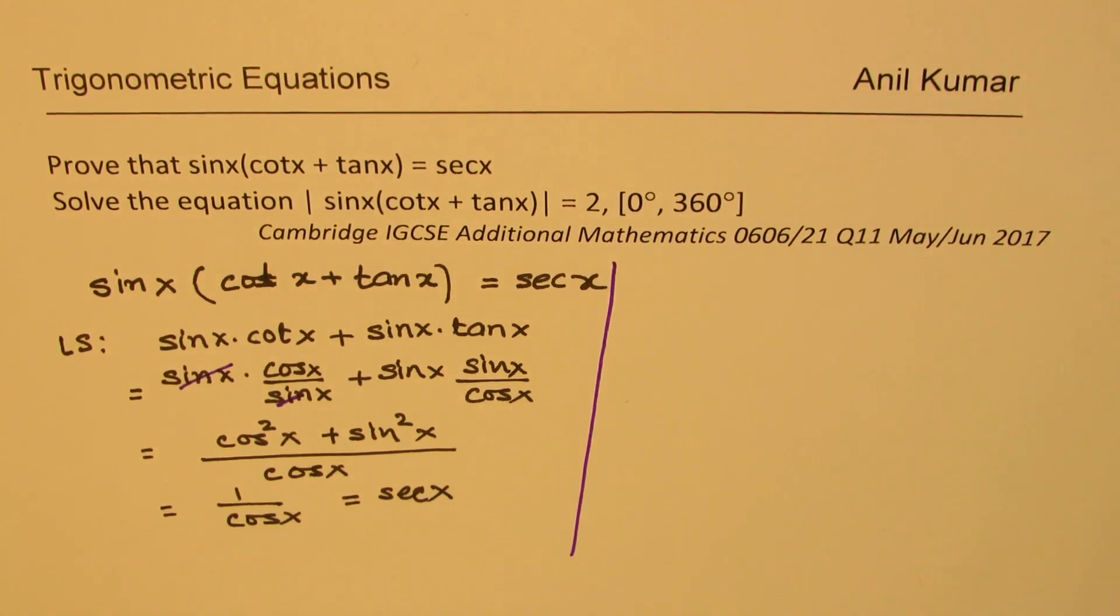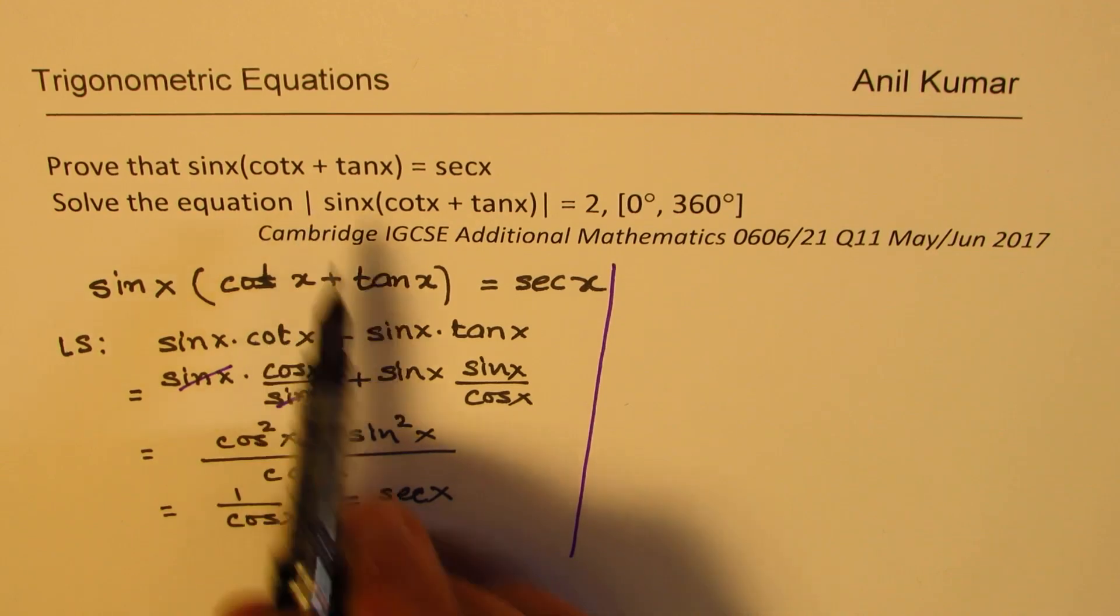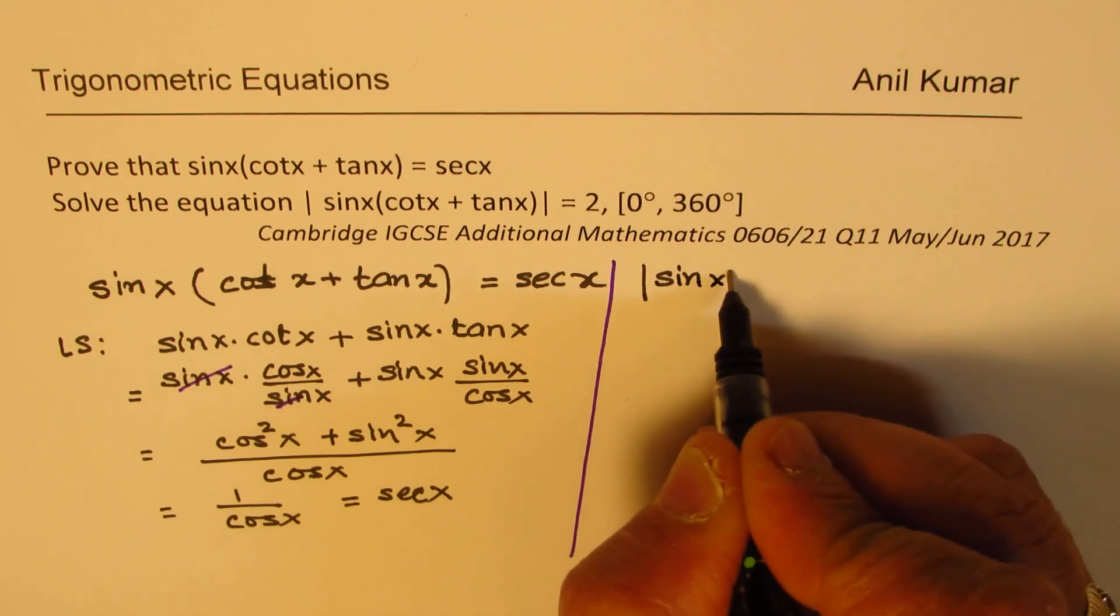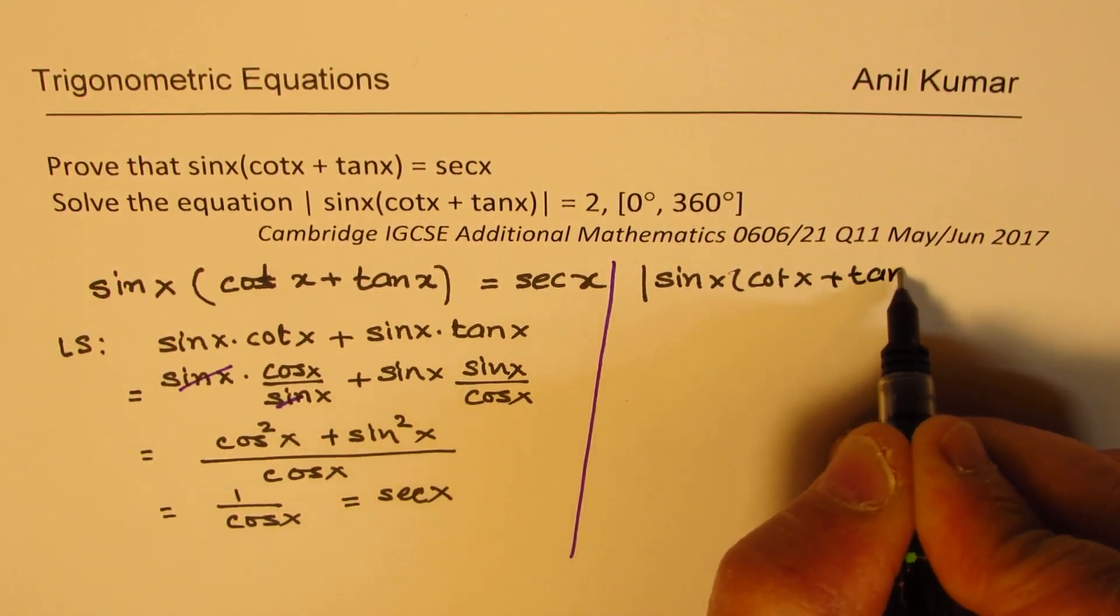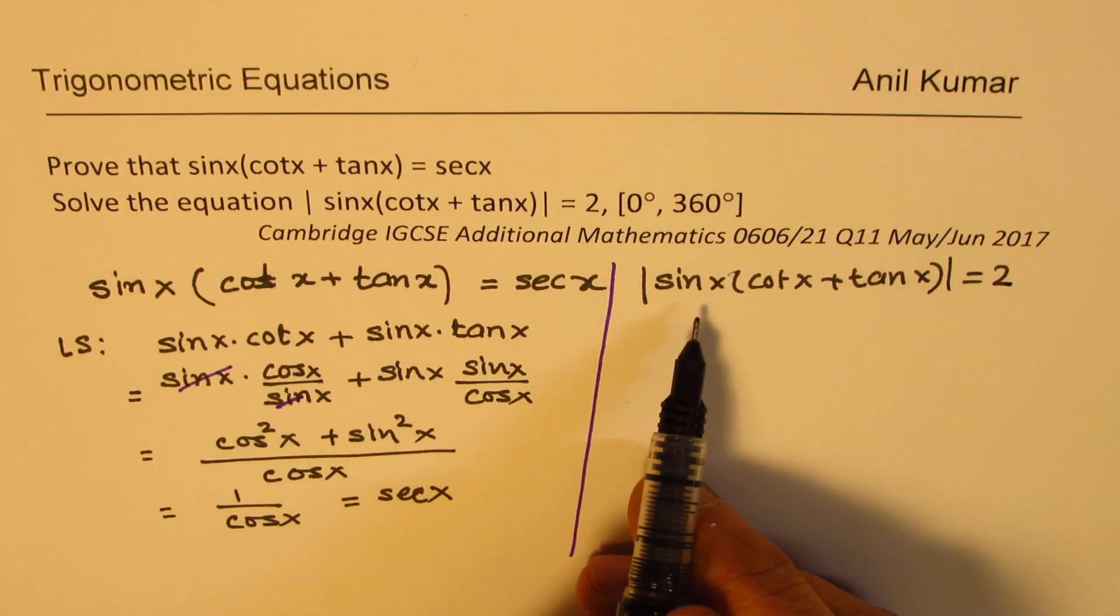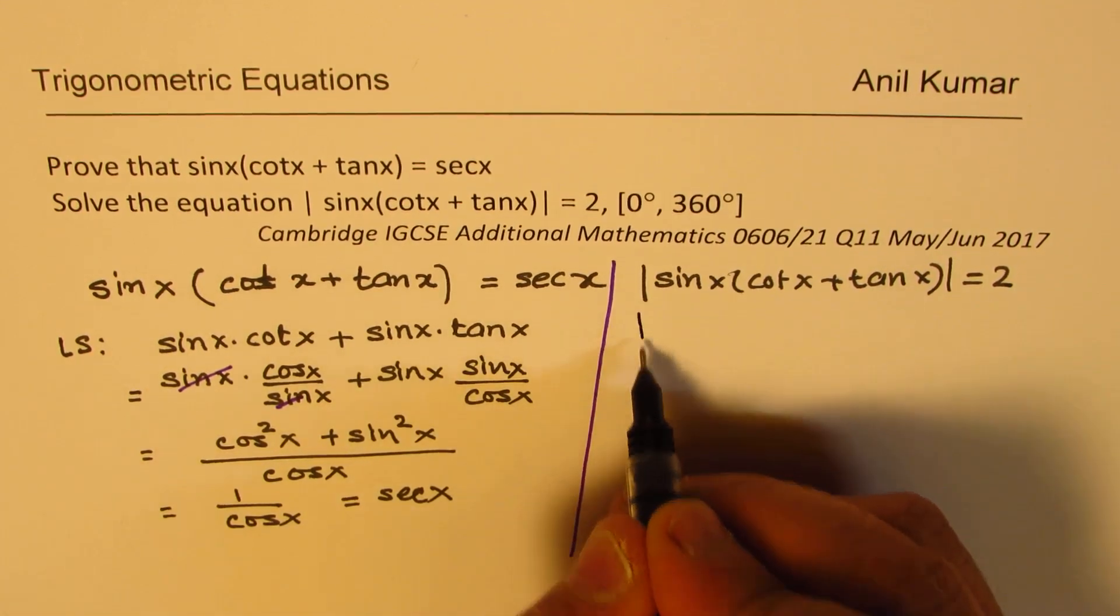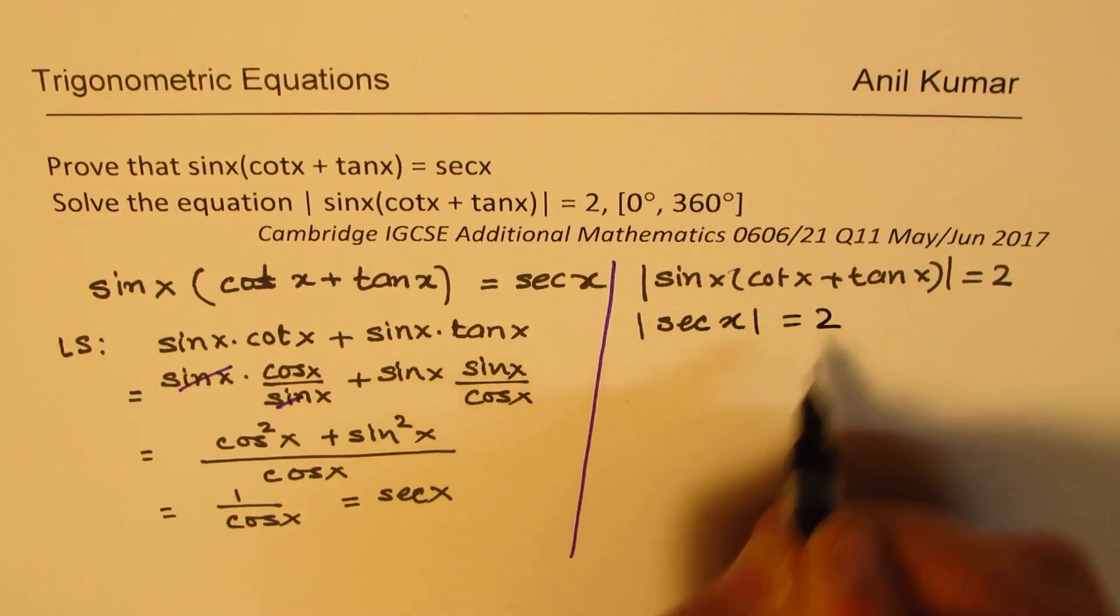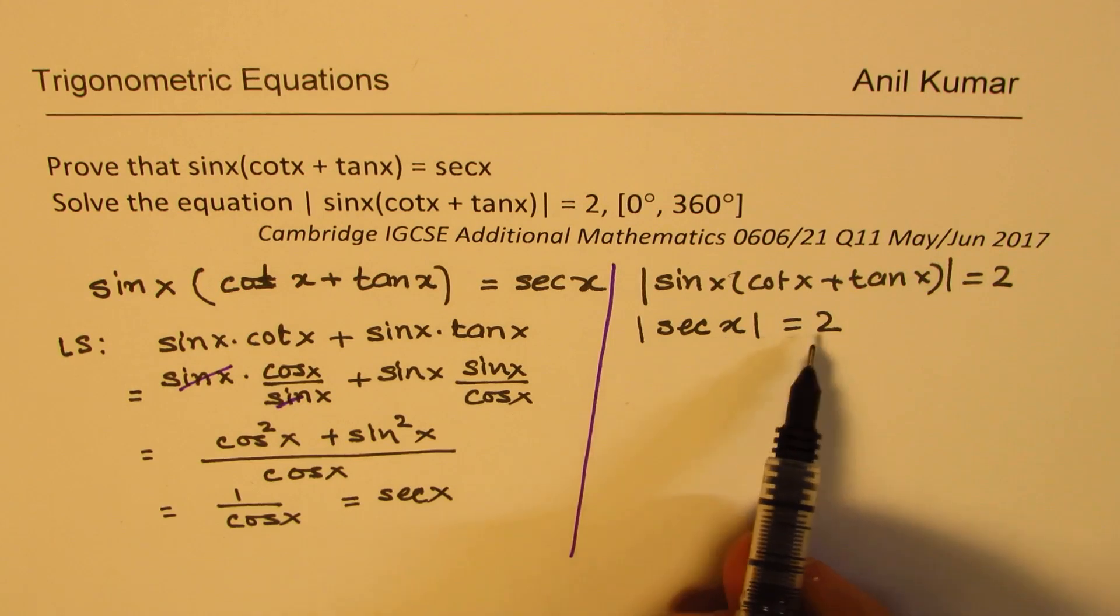Now let us see how to solve this equation. Now we are given absolute value of sin x times cot x plus tan x is basically secant x. We get absolute value of secant x equals to 2.